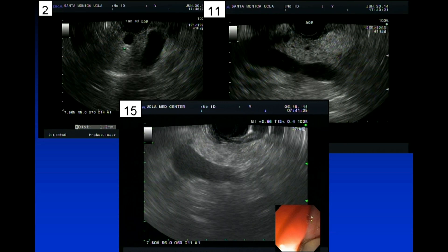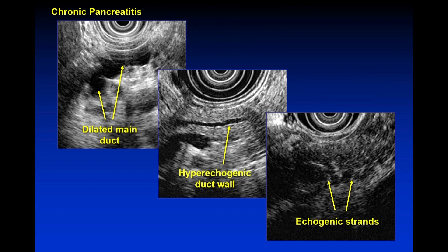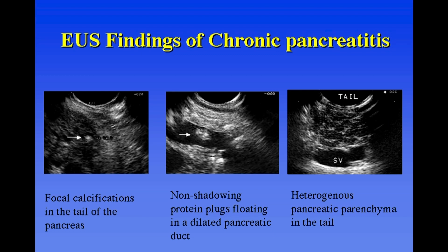This is kind of a normal pancreas — nice hyperechoic salt and pepper, homogenous gland with a non-dilated duct. And here are some EUS findings of abnormal pancreas. You can see some of the ductal findings in the first few panels, and then what we call echogenic strands, which correspond to fibrosis. The presence of calcifications is highly suggestive, as is the presence of pancreas duct stones.